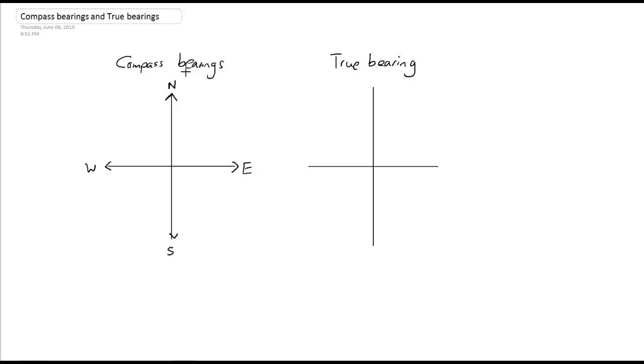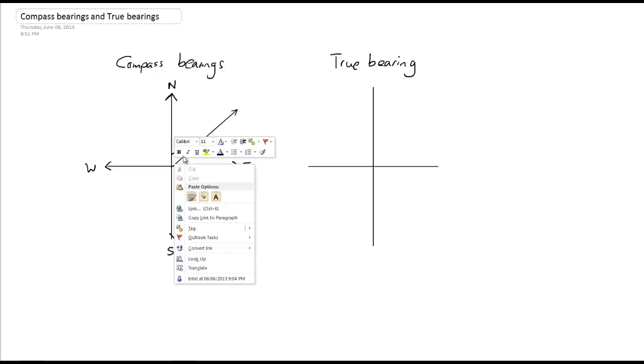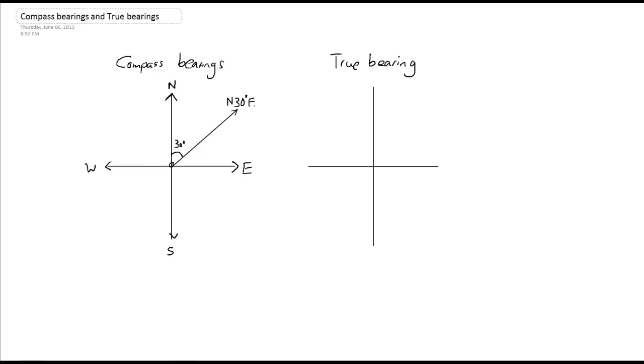starting from the origin, let's say I want to travel in this direction here. Now let's say I have measured this angle here to be 30 degrees. Then this direction from the origin is called north 30 degrees east.